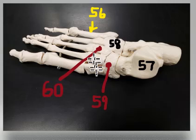60. There are three bones side by side. Notice that this is the inside and this is the outside, so label that bone accordingly.